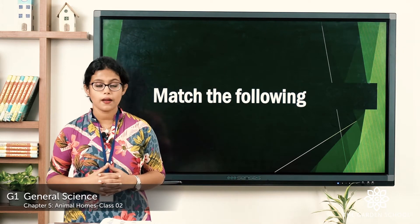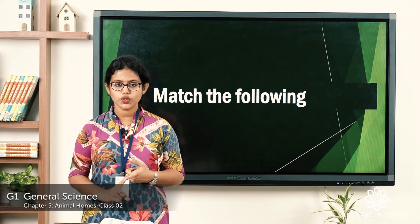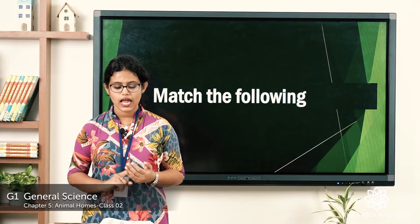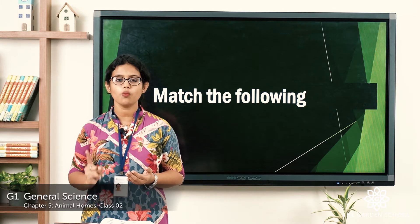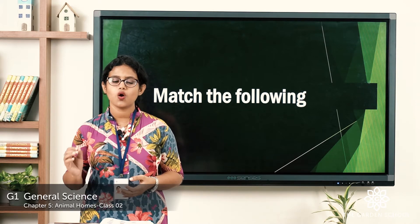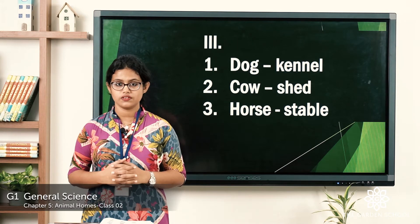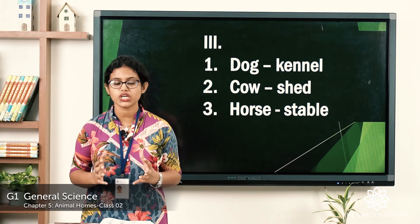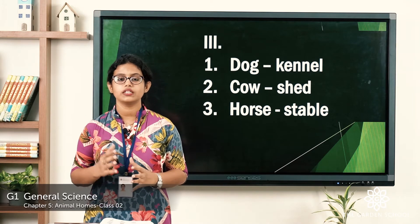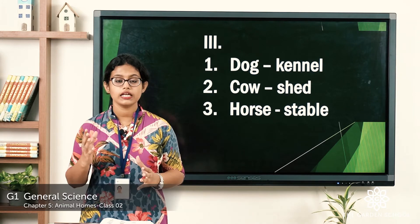Moving on to the third exercise — match the following. In column A you have the names of animals, and in column B you have the names of their homes. You have to match the animals with their home. Dog — where do dogs live? They live in the kennel, a small shed made in the shape of a house. Cow lives in the shed. Horse lives in the stable.